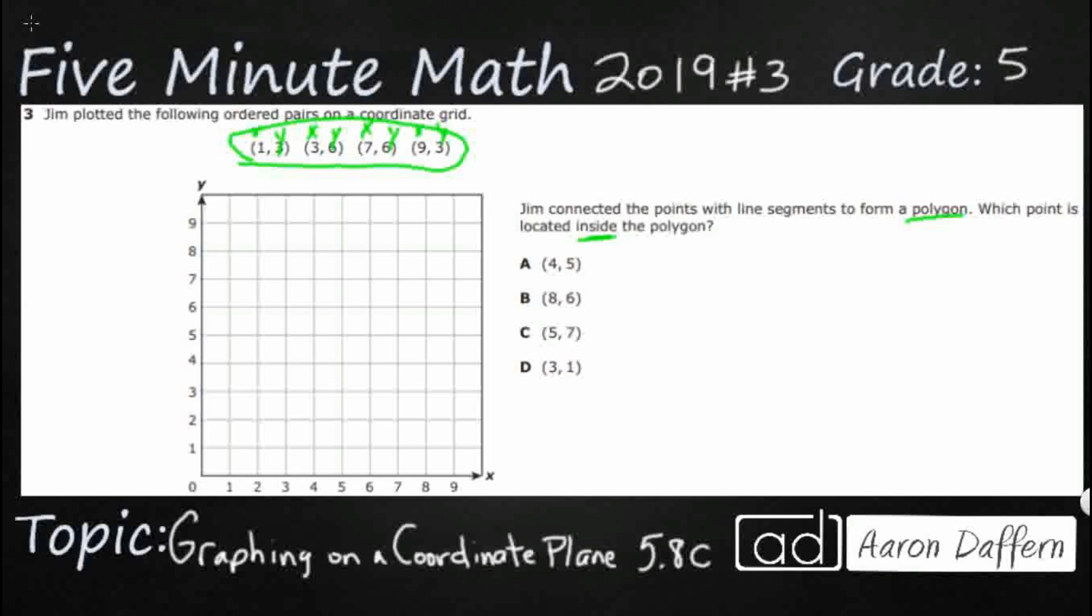X is 1, so I go right there, then I move up 3 - 1, 2, 3 - so here's my first dot. I'll make it a big dot because I'm going to make the other dots small. My next one is 3, 6, so I move over 1, 2, 3 to 3, and then 6 is way up there. Connect those two and I get this right there.